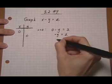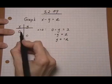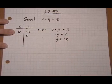Divide both sides by negative one and we get y is minus two. So when x is zero, y is minus two. That's our first ordered pair.